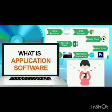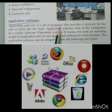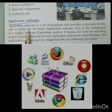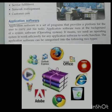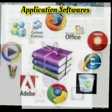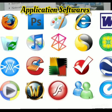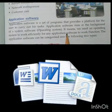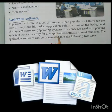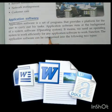Let us continue with our next topic: application software. Application software is a set of programs that provides a platform for the user to carry out his tasks. Application software are programs that help you do some specific jobs — they provide a platform to perform specific tasks. For example, if you want to write something on a computer, you would require word processor programs like MS Word, WordPad, or Notepad. These are word processors and these are application softwares.